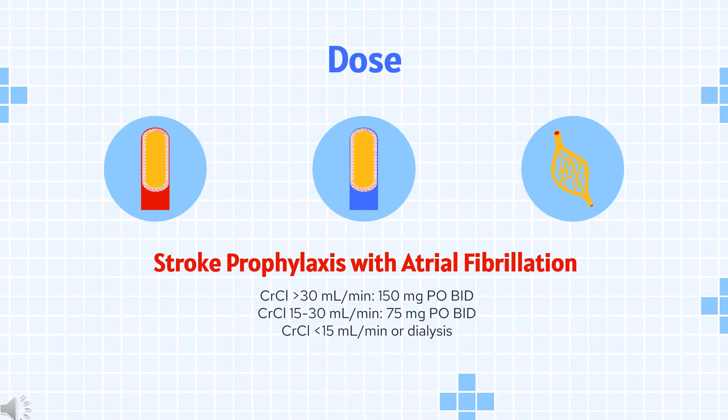Dose — Stroke Prophylaxis with Atrial Fibrillation: Prevention of stroke and systemic embolism associated with non-valvular atrial fibrillation. CrCl greater than 30 mL per minute: 150 mg PO BID. CrCl 15–30 mL per minute: 75 mg PO BID. CrCl less than 15 mL per minute or dialysis: no data available, not recommended.